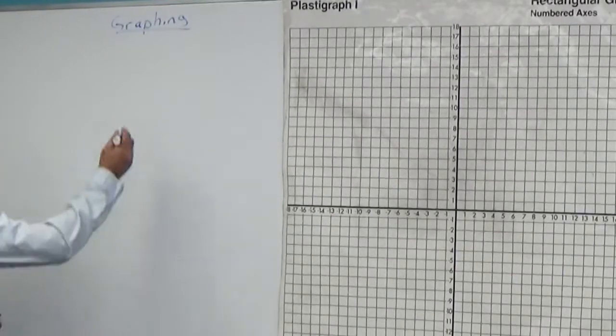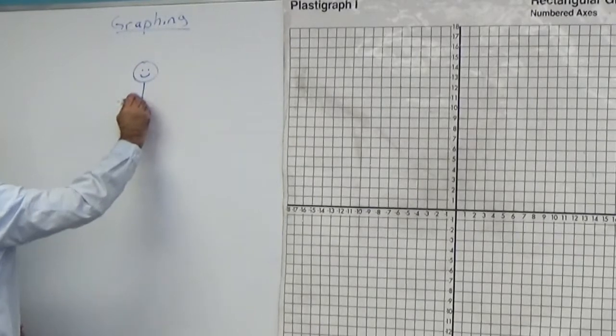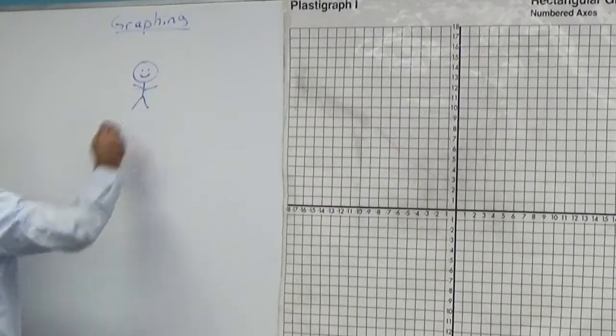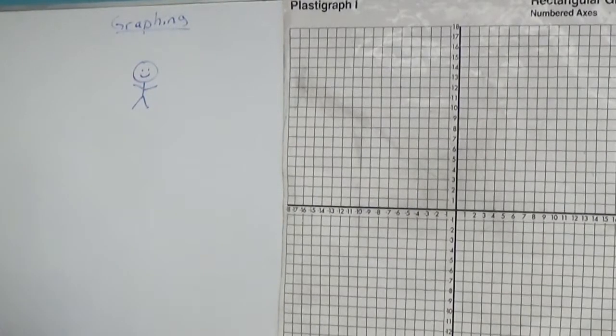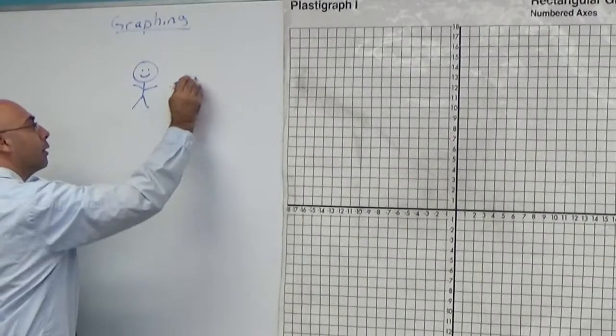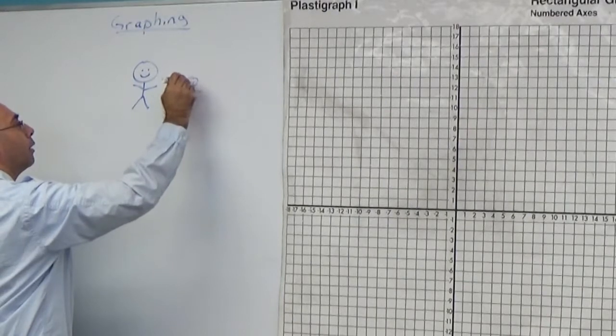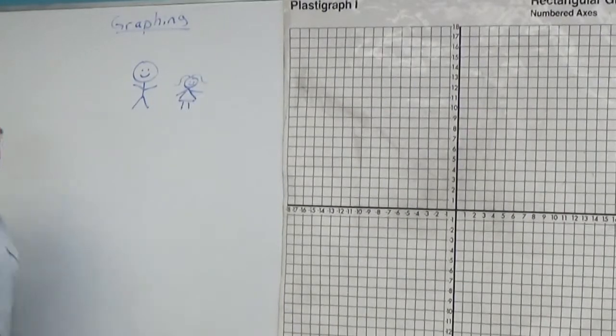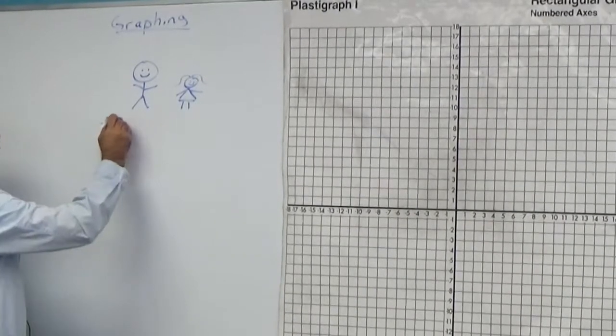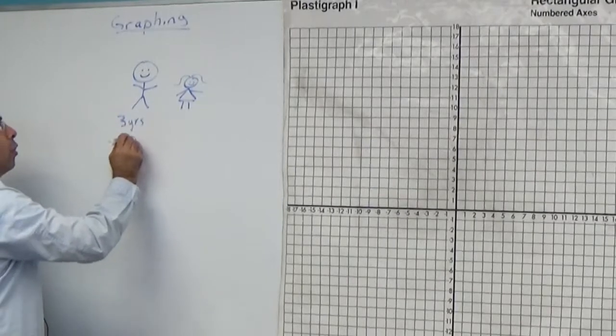So we got our guy here, Dylan. Big Dil. He's three years older than Ellen. So he's three years older.